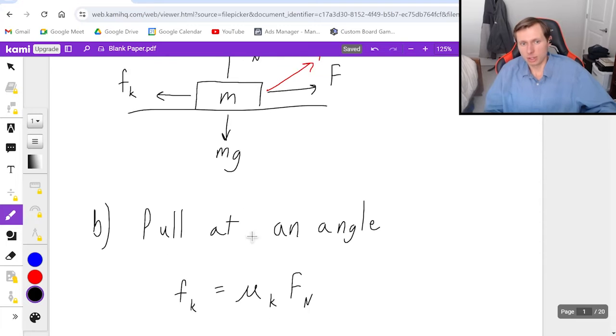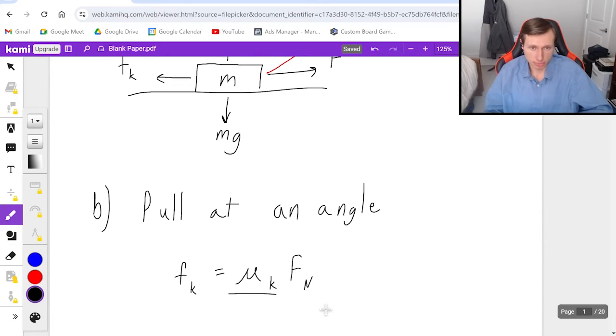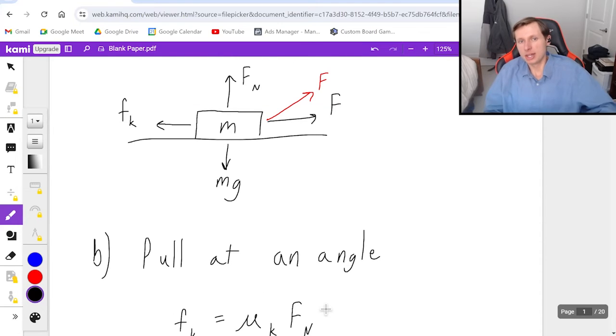If I'm pulling at an angle, of course, that doesn't change mu k, because that only depends on the surface, the coefficient of friction. And if I'm pulling at an angle that is going to affect my normal force, how so?